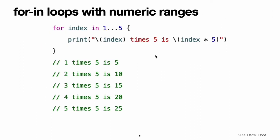You can also use for-in loops with numeric ranges. This example prints the first few entries in a five times table. The sequence being iterated over is a range of numbers from one to five inclusive, as indicated by the use of the closed-range operator. The value of index is set to the first number in the range, one, and the statements inside the loop are executed. After the statement is executed, the value of index is updated to two, and the print function is called again. This process continues until the end of the range is reached.